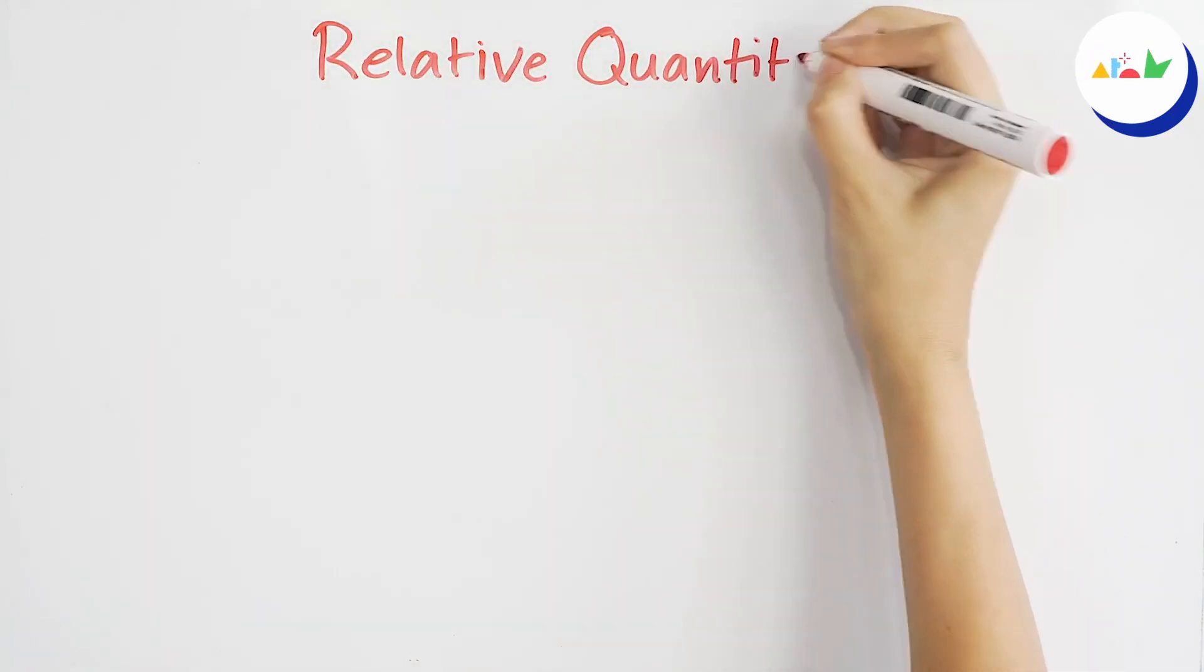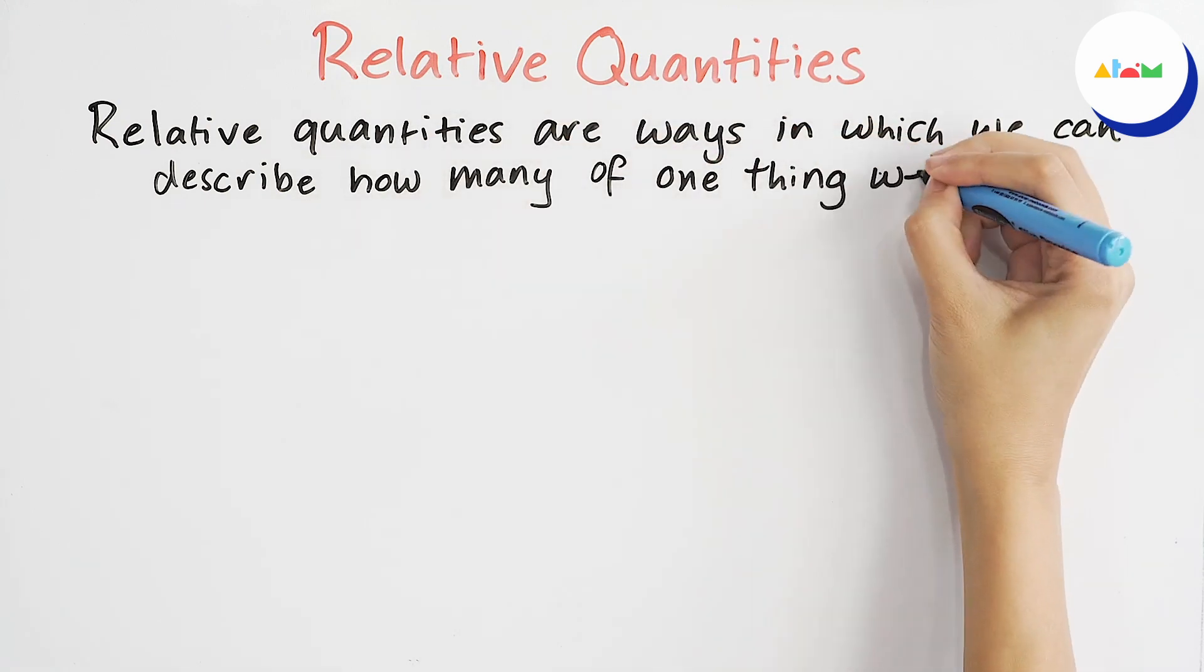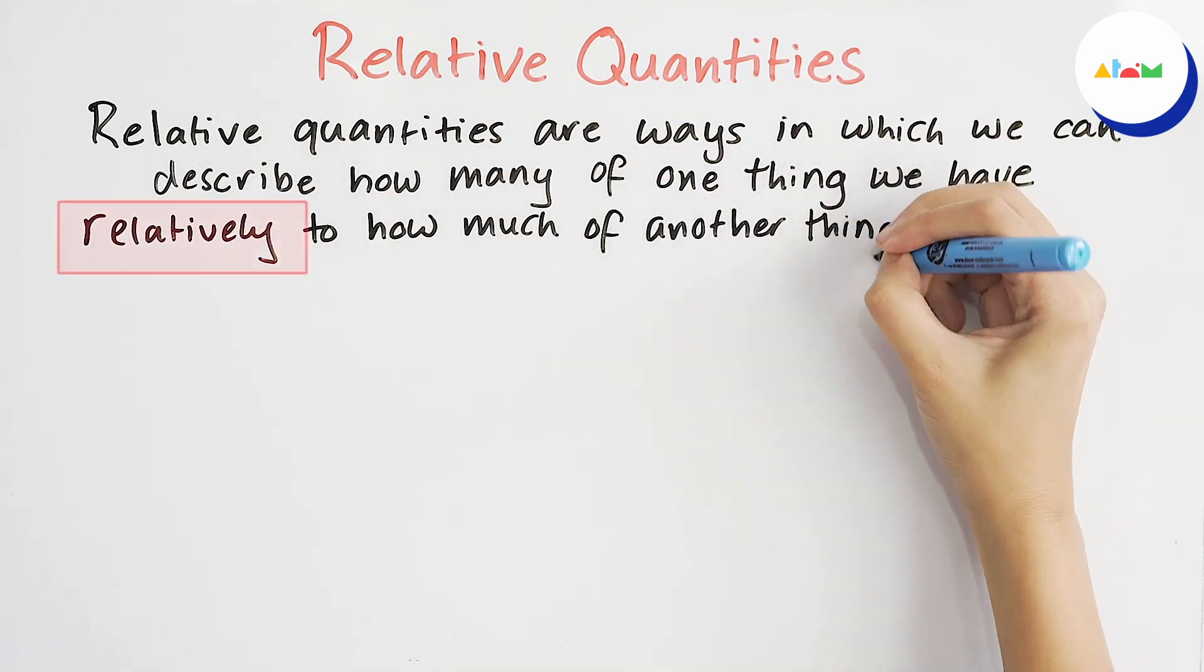Relative quantities. Relative quantities are ways in which we can describe how many of one thing we have relatively to how much of another thing we have.